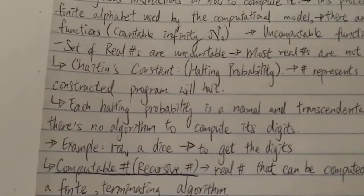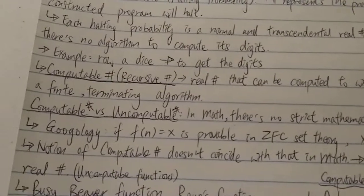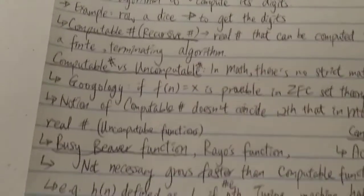But again, it's actually quite obvious. If there's an algorithm to calculate it, an explicit algorithm, it's computable. If there's no algorithm, it's uncomputable.